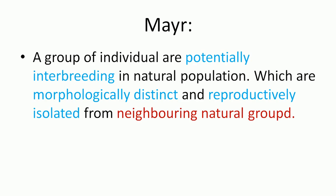Mayr is another contributor with a concept related to species. He put forward his opinion: a group of individuals are potentially interbreeding in the natural population, which are morphologically distinct and reproductively isolated from neighboring natural populations. This is the biological species concept — any group of individuals that interbreed with each other and, in natural conditions, are morphologically distinct and reproductively isolated from other groups.